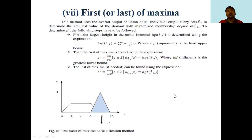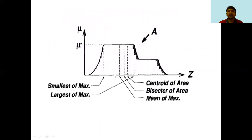The first or last of maxima method uses the overall output, or union of all individual output fuzzy sets, to determine the smallest value of the domain with maximized membership degree in ck. The steps are: first, determine the largest height in the union, denoted by height of ck, using a specific expression. Then the first of maxima is found, and if needed, the last of maxima can be found using the corresponding expressions. Different values such as smallest of maxima, mean of maxima, bisector of area, centroid area, and largest of maxima are calculated for the membership functions.